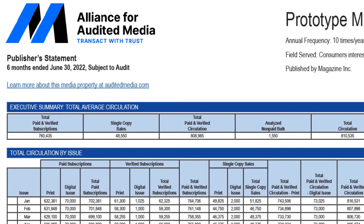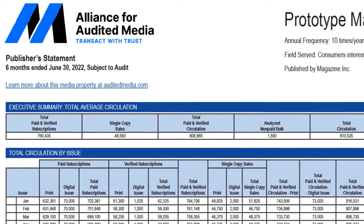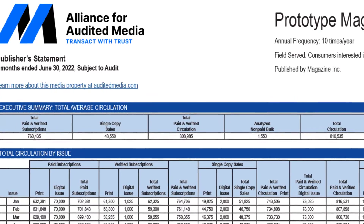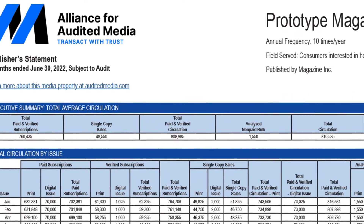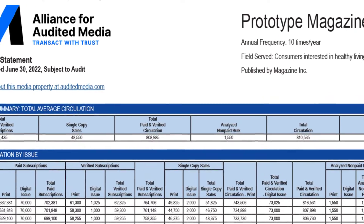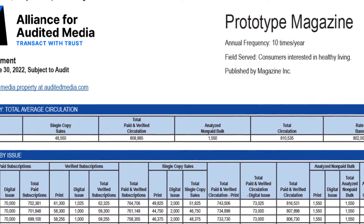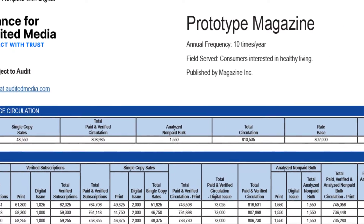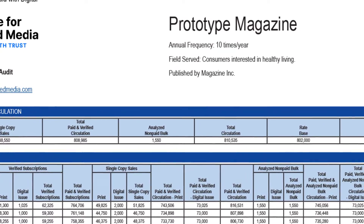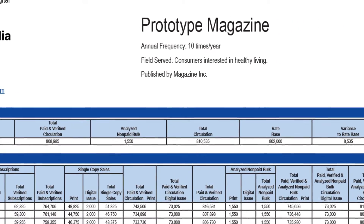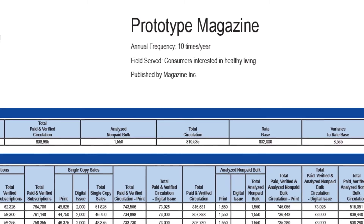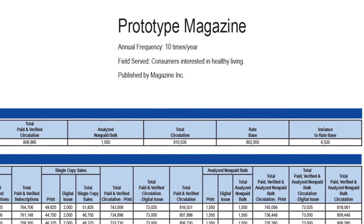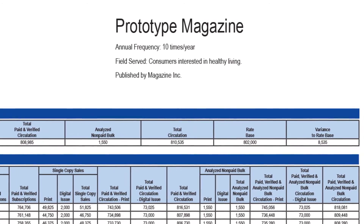AAM's magazine publisher statements are published twice a year for the six months ending June 30th and December 31st. The data on the reports are the publisher's claims for the period and are subject to audit. Here's how to navigate the U.S. and Canadian magazine statement and find the data you need.